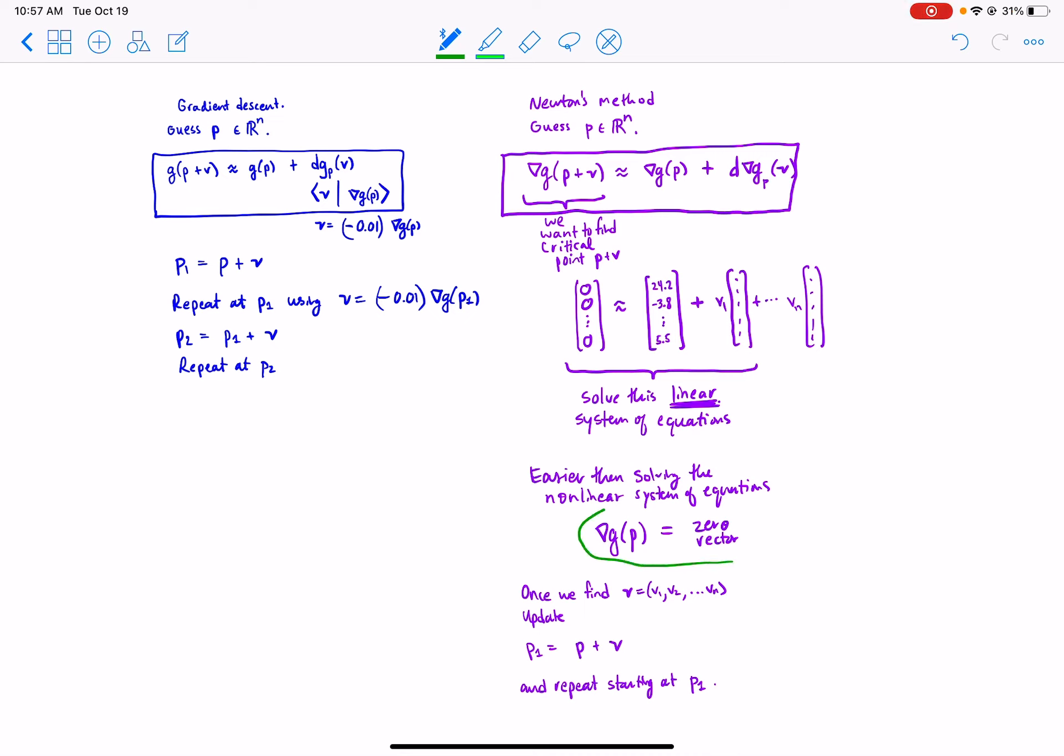We take this nonlinear system of equations in the unknown P—critical point—and we make it into this linear system in a movement vector. That will be how we move and update our guess. All right.